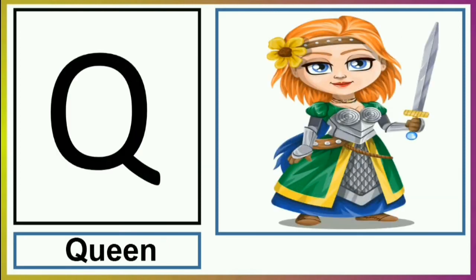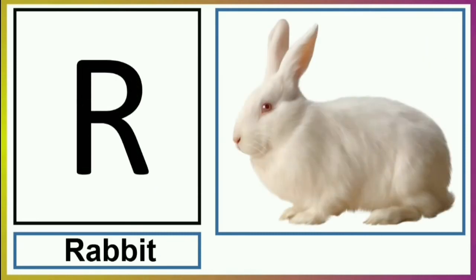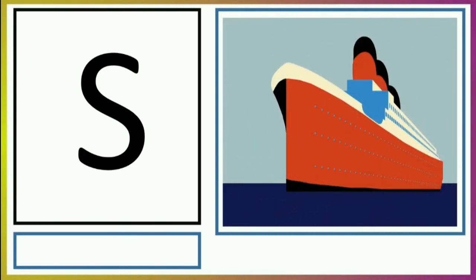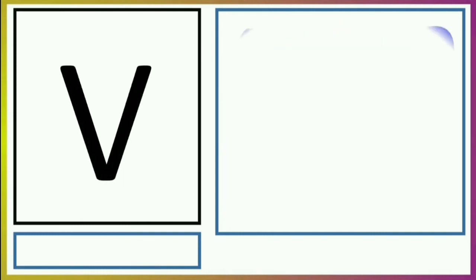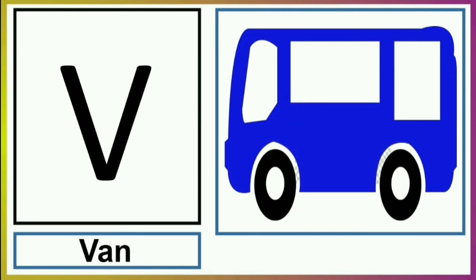Q for Queen. R for Rabbit. S for Ship. T for Tiger. U for Umbrella. V for Van.